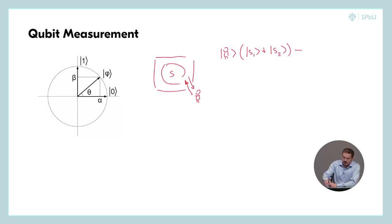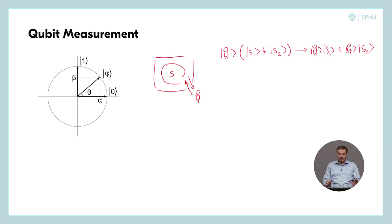And after observation, we have two different copies of the observer, each of them observing a different state of the system. This is how measurement looks like from the multiverse point of view.